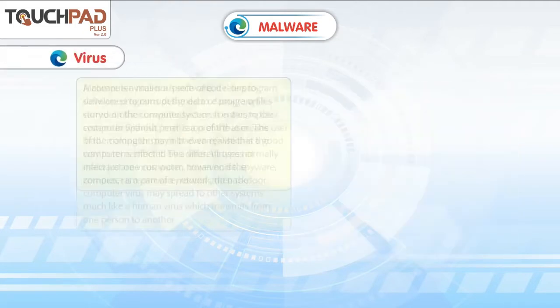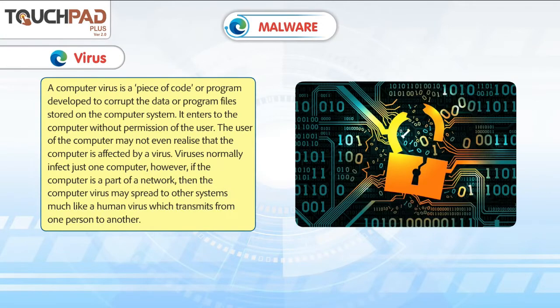Virus: A computer virus is a piece of code or program developed to corrupt the data or program files stored on the computer system. It enters the computer without permission of the user, and the user may not even realize that the computer is affected by a virus. Viruses normally infect just one computer.